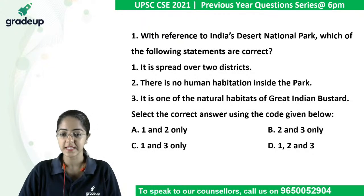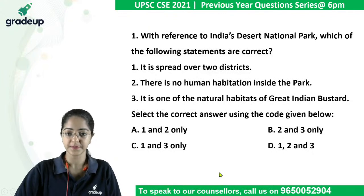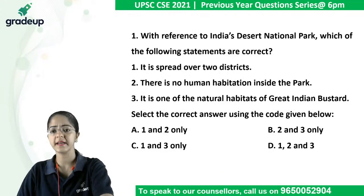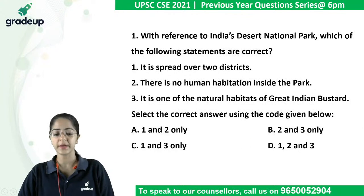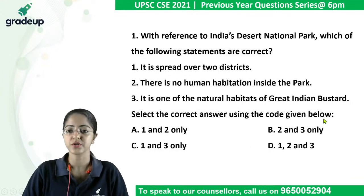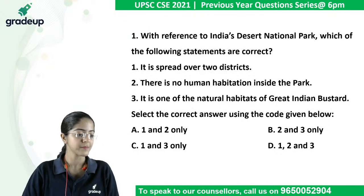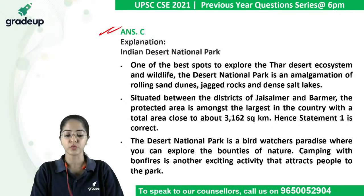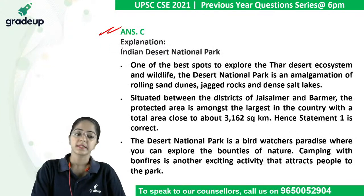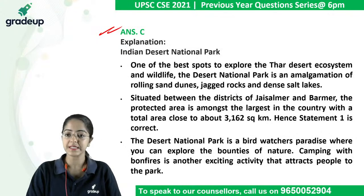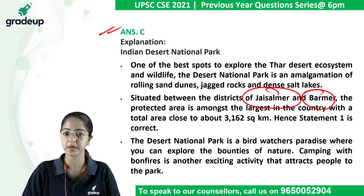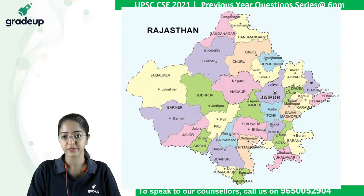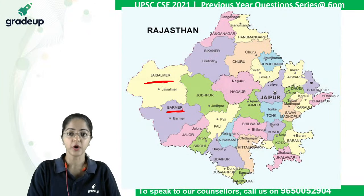Many of you are saying the answer is C. Let us see what the answer is. Spread over two districts — correct. No human habitation — incorrect. One of the natural habitats of GIB — correct. Answer is C, absolutely correct. It is spread over two districts. Which are the two districts? Some people get confused — they think it is Bikaner, but it is Jaisalmer and Barmer. You can see this is the map of Rajasthan — here is Jaisalmer and here is Barmer, not Bikaner. Bikaner is over here.